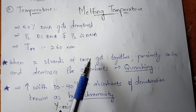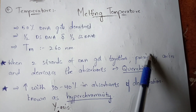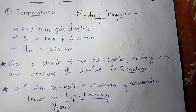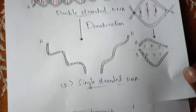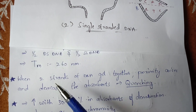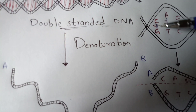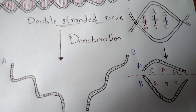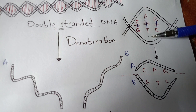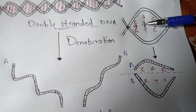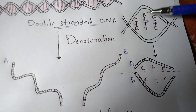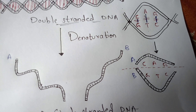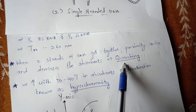When two strands of DNA come together in proximity, stacking interactions arise between the base pairs and absorbance decreases. This phenomenon is known as quenching. When both strands — A and B — come together, the proximity creates tension between the base pairs, leading to the breaking of bonds and separation into single-stranded DNA.